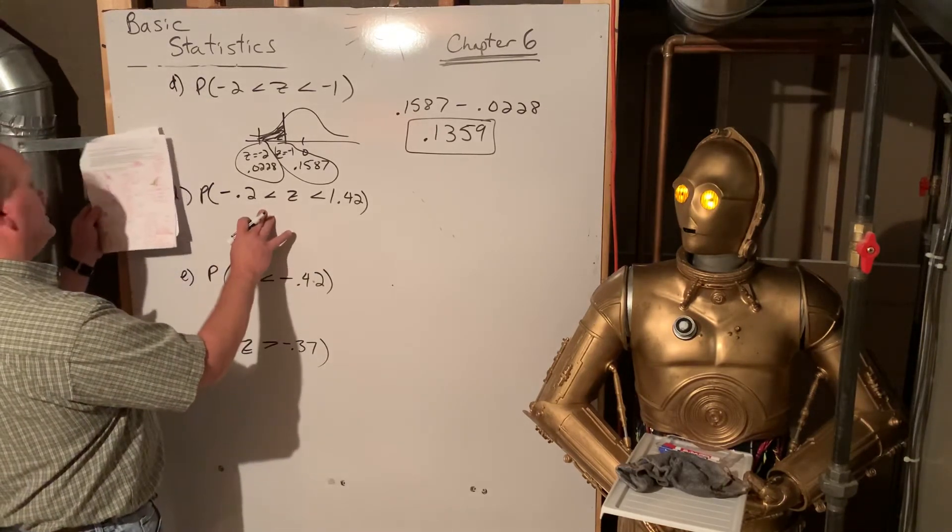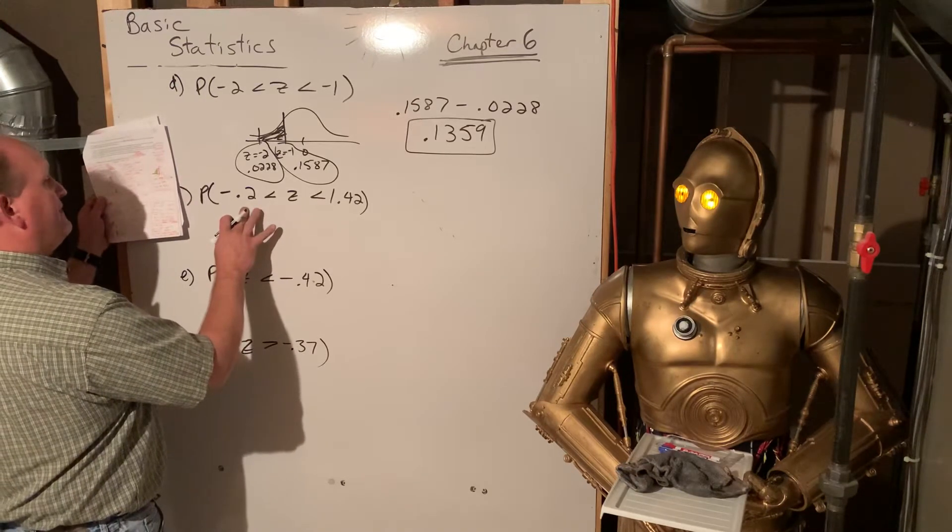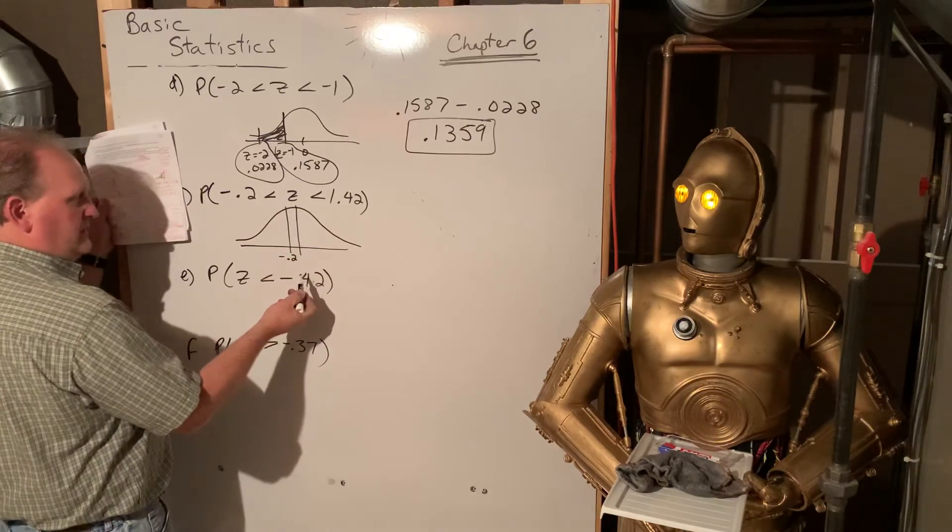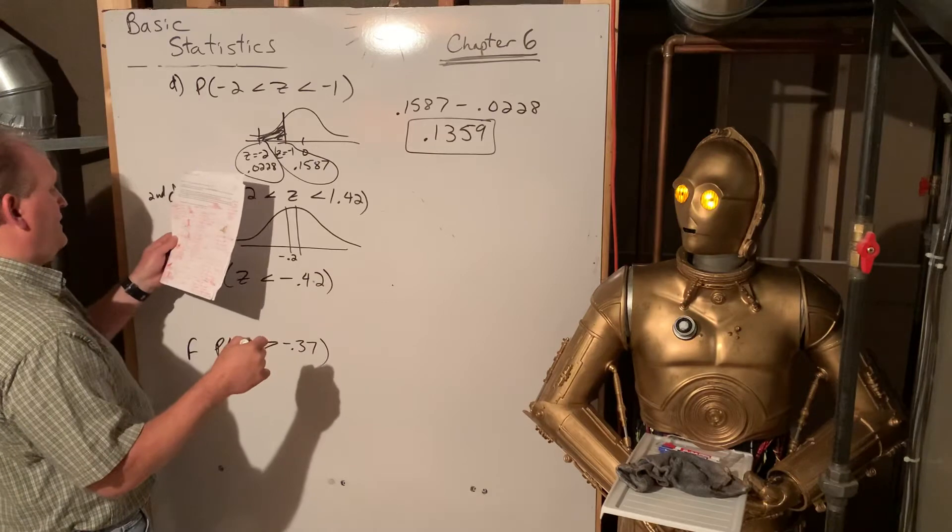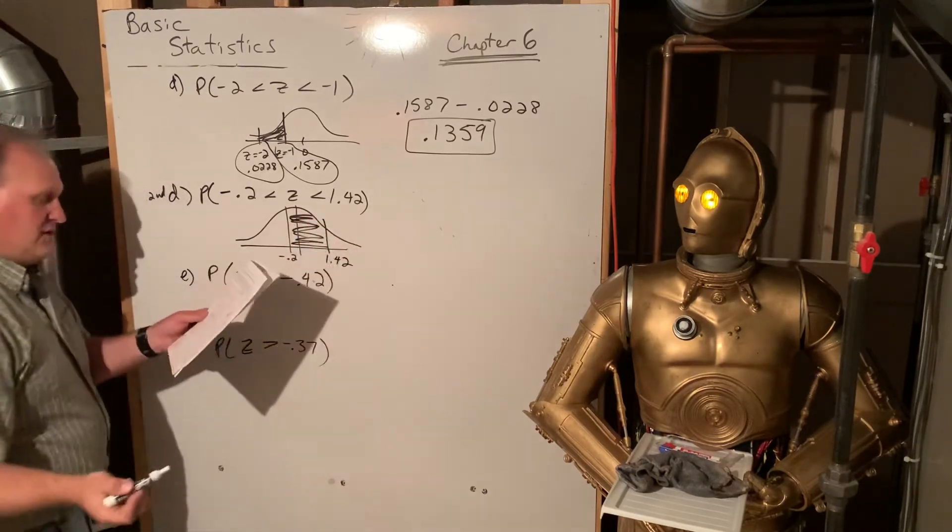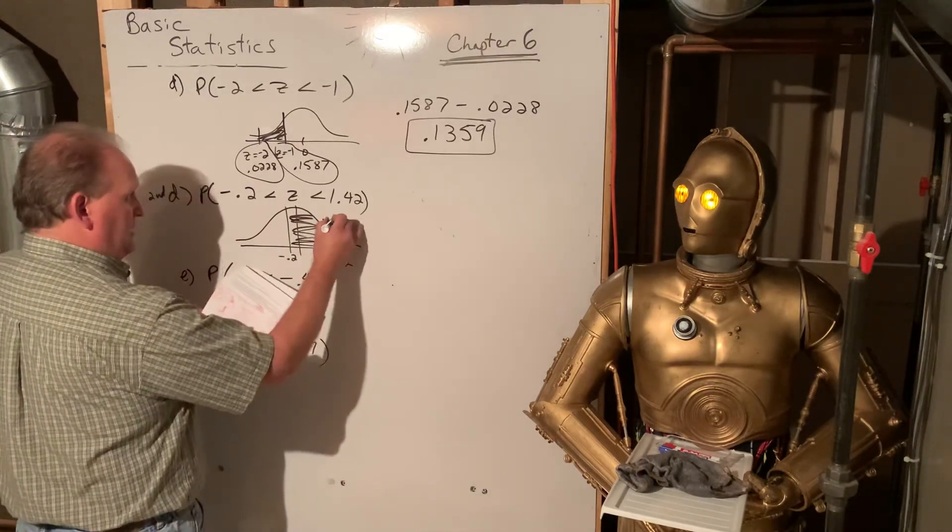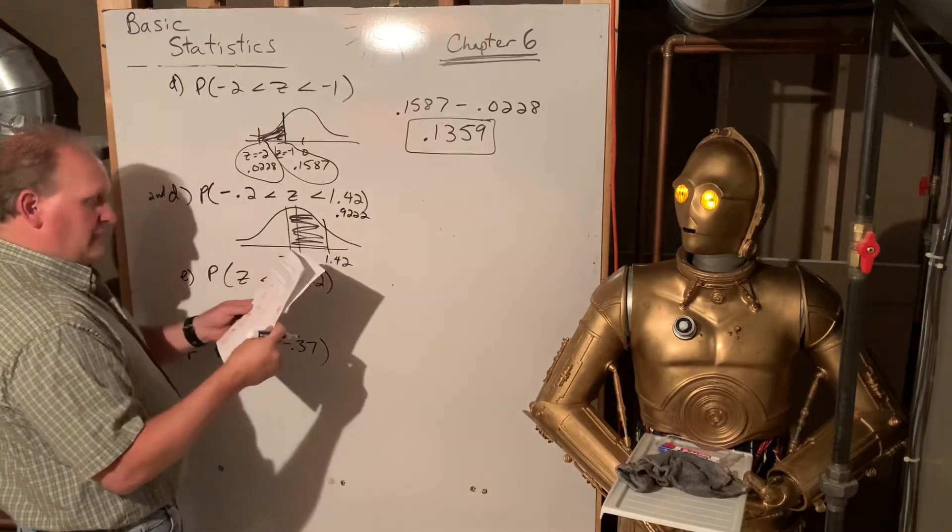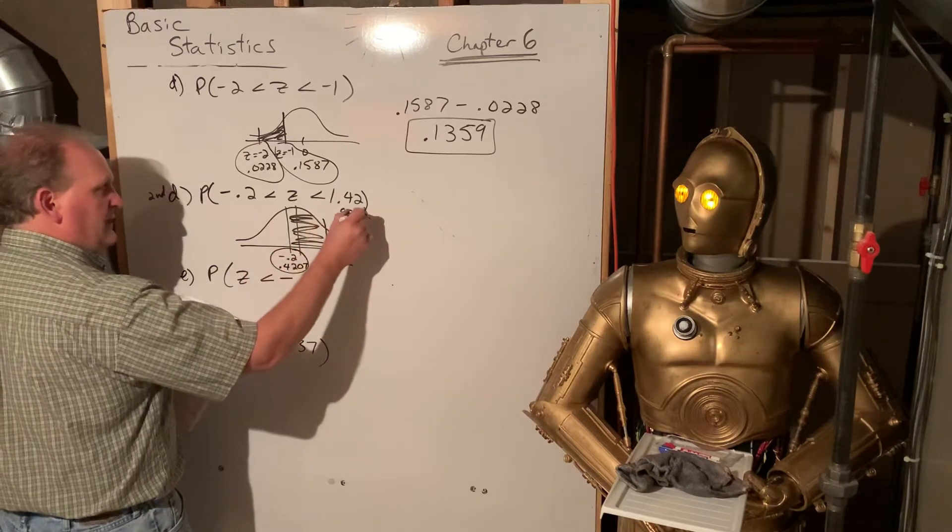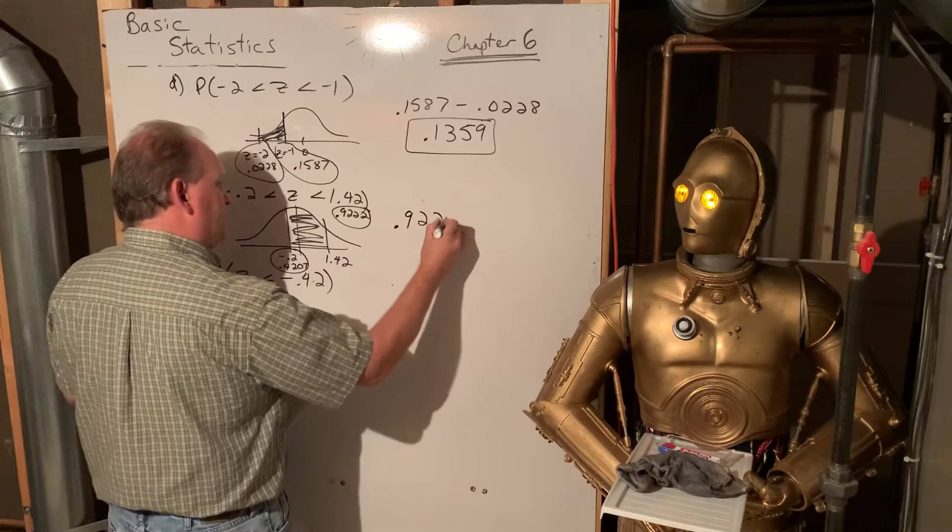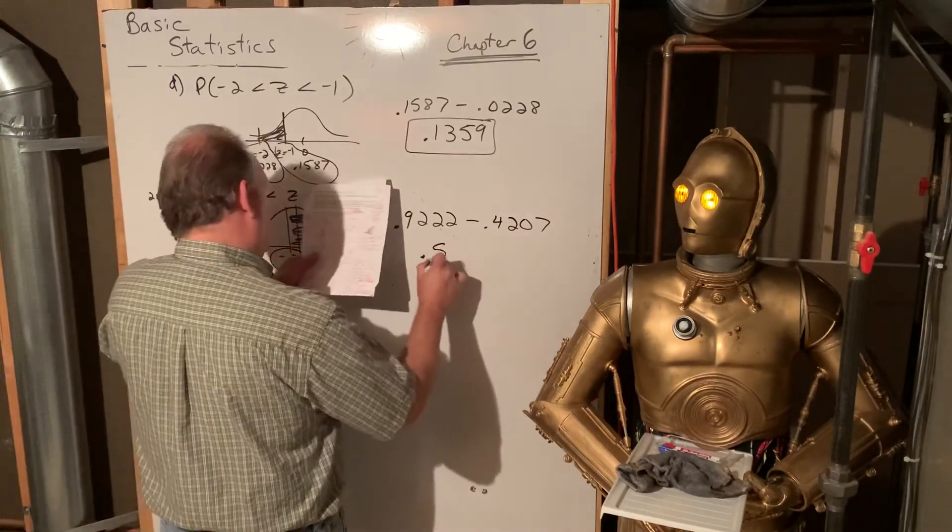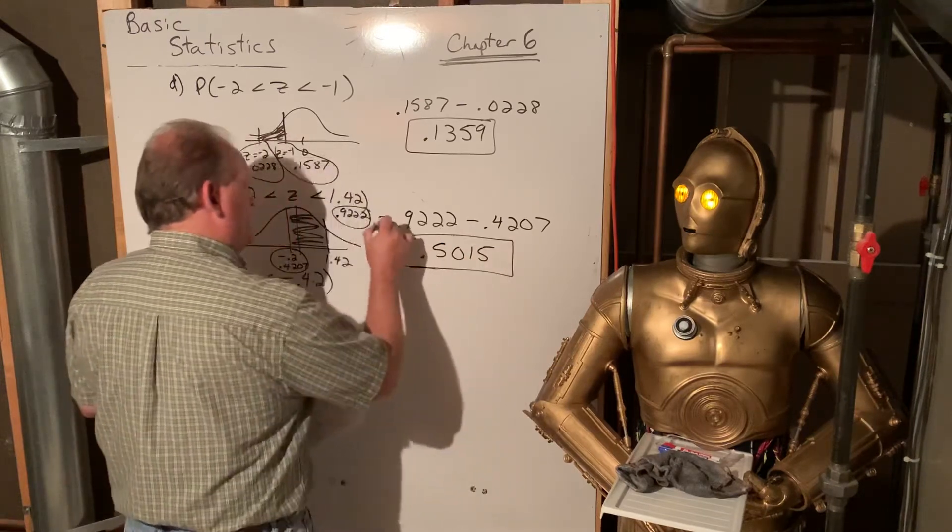Alright. Okay. So let's take a look at this one. The second D is from negative 0.2. So that's really close to the center. Negative 0.2, that's two-tenths of a standard deviation below the mean. So that's really close to the mean. And then 1.42. That's going to be up a ways. And we want that area in between. So when we look that up on our chart, the 1.42, that is 0.9222. And negative 0.2 is really close to the 50%. That's 0.4207. And so we take those values and subtract them. So it'll be in the neighborhood of 50%, right? 0.5015 is the answer for that one.